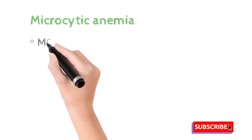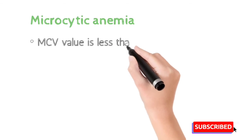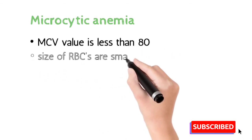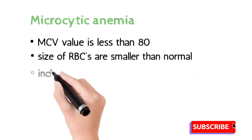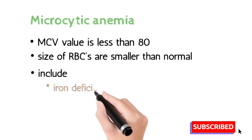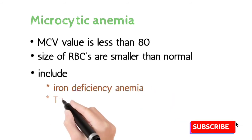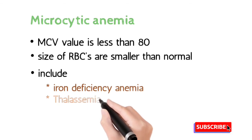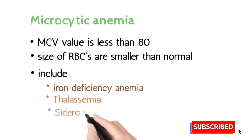In microcytic anemia, the MCV value is lower than 80 and the size of RBCs is also smaller than normal. Conditions included are: iron deficiency anemia, thalassemia — during which the size is also smaller than normal — and sideroblastic anemia.